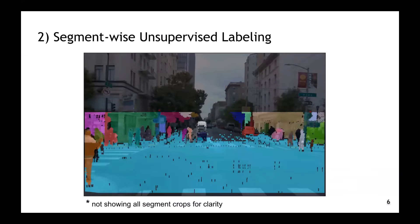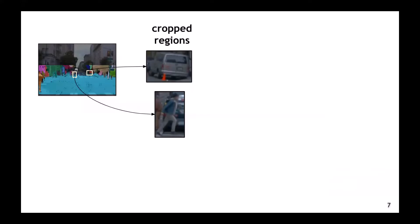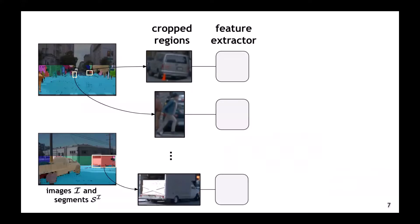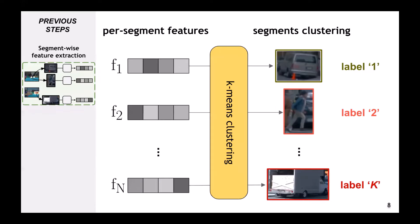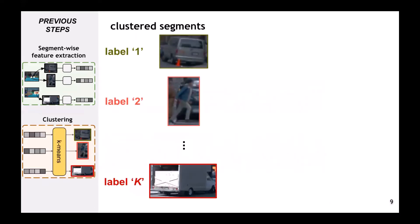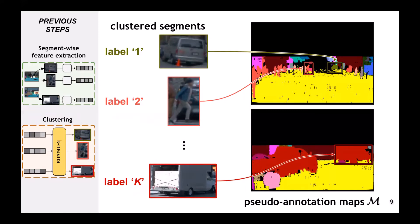The second main stage is segment-wise unsupervised labeling. We start by taking crops around the segments in the image. We do this for all images and segments in our dataset and feed the crops into a self-supervised feature extractor to get per-segment features. Next, we use the k-means algorithm to cluster all segment features and get a pseudo-label ID for each segment. To get a dense segmentation map, we assign the cluster ID to the whole segment in the image. We assign a predefined ignore label to pixels not covered by a segment.